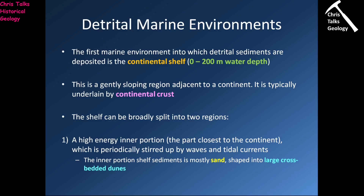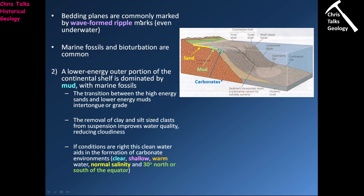Lighter material like silt and clay can get picked up by all this moving water and pulled out into deeper water. This means the higher-energy inner portion is dominated by sands on the whole. Sometimes if it's very high energy, it can be dominated by gravels and cobbles, but most of the time it's dominated by sand. Because of these very strong tidal flows and wave-related processes, you'll tend to get lots of large crossbeds — these marine sand dunes that form underwater and are moved around by tidal currents.